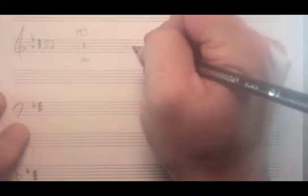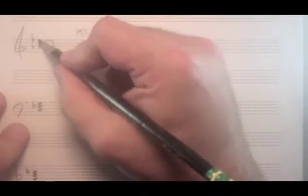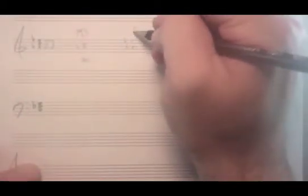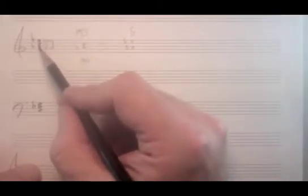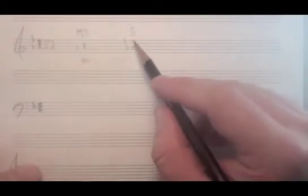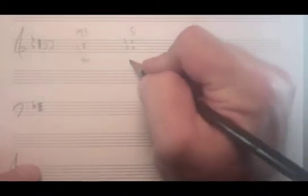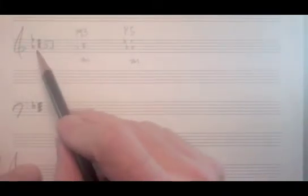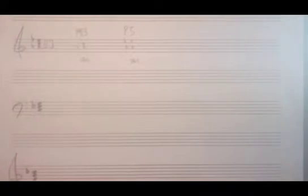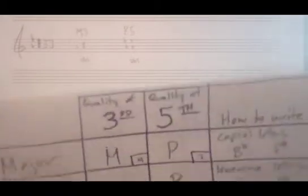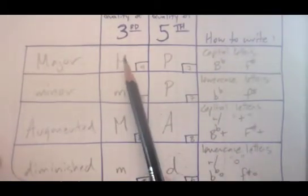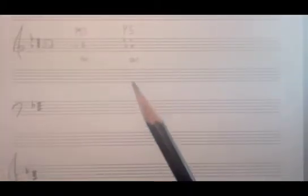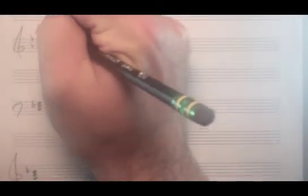Next we need to figure out the distance from the first degree to the fifth. A-flat to E-flat — A, B, C, D, E — is some sort of fifth. If we count half steps between A-flat and E-flat we get seven half steps, which means this is a perfect fifth. We have a major third and a perfect fifth, and checking the triad grid that means it's a major triad, notated with just a capital letter. So this is A-flat.